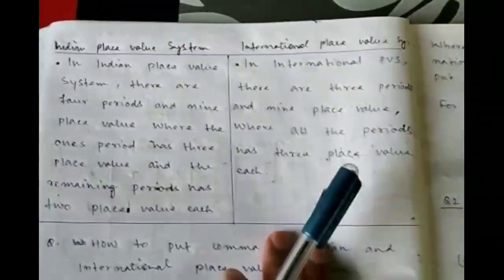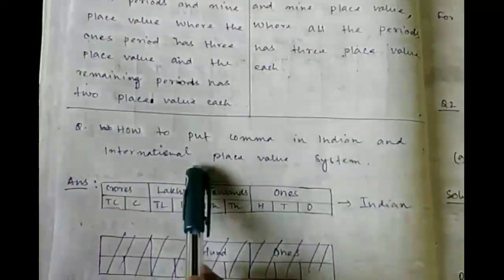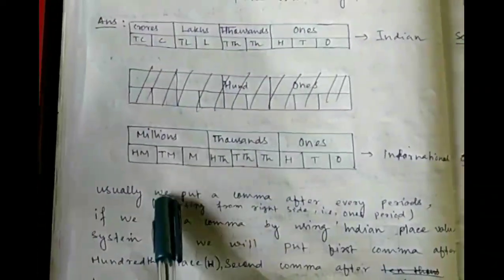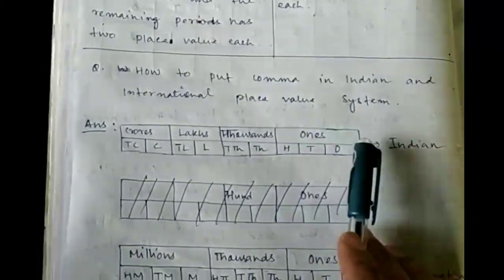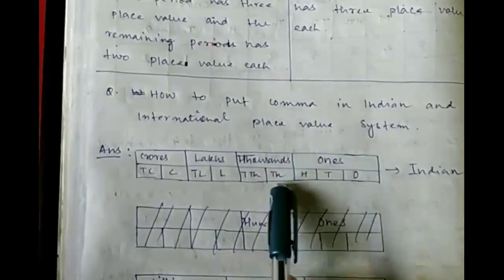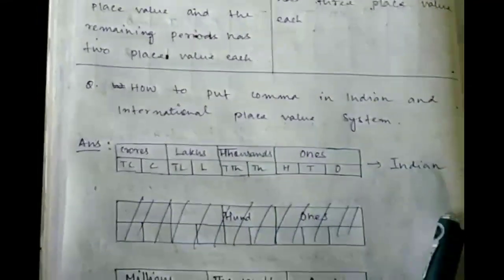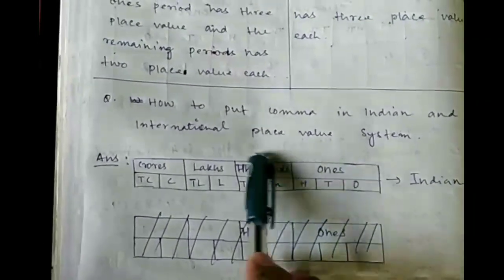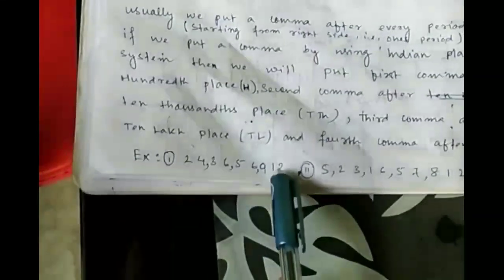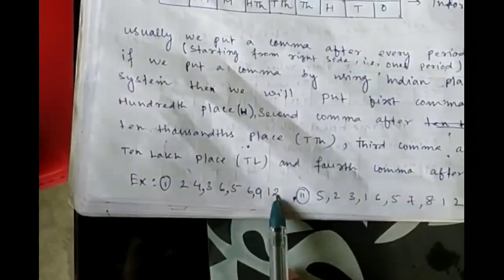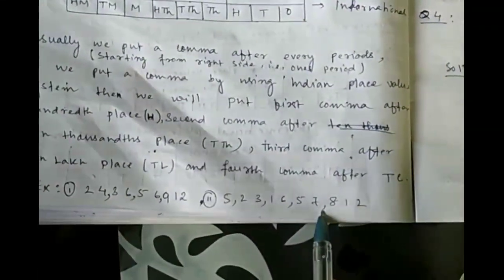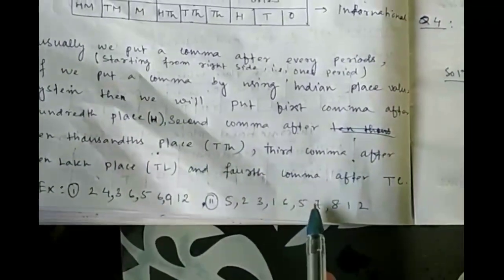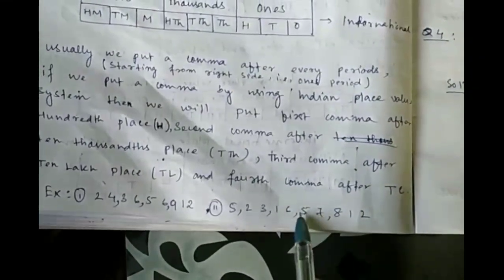Now, how to put a comma in the Indian and International Place Value systems. We put a comma after every period starting from the right side, that is from the ones period. Using the Indian Place Value System, the first comma goes after three places, and the remaining commas go after every two places, because the first period ends after three places and the remaining periods end after two places each. Similarly, in the International system, the first comma goes after three places and the remaining commas also go after every three places.